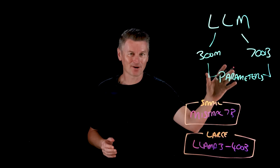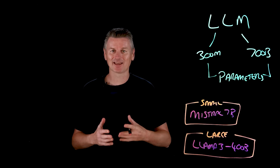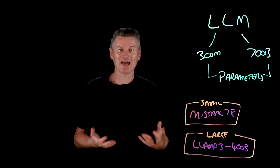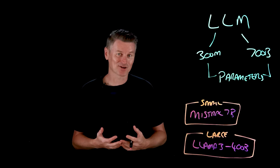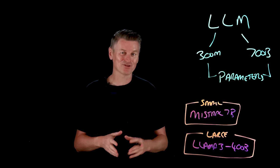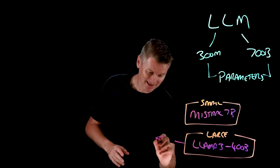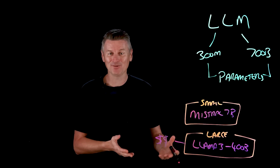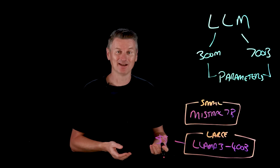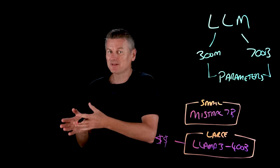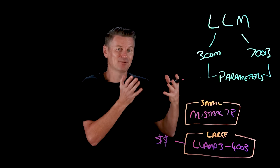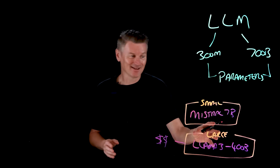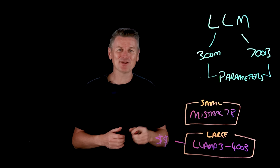In broad strokes, extra parameters buy extra capability. Larger models have more room to memorize more facts, support more languages, and carry out more intricate chains of reasoning. But the trade-off is cost — they demand exponentially more compute, energy, and memory, both to train them in the first place and to run them in production.